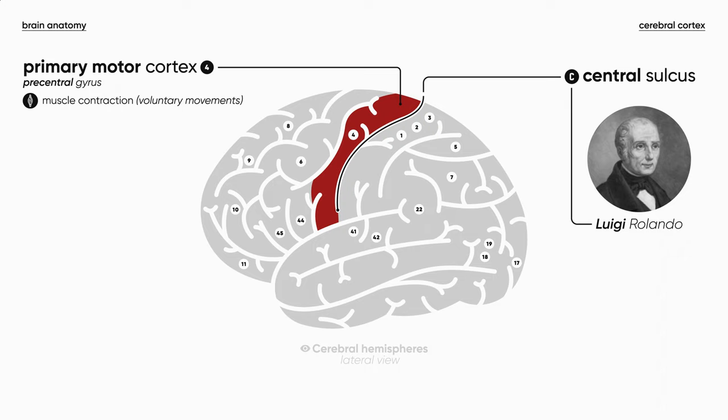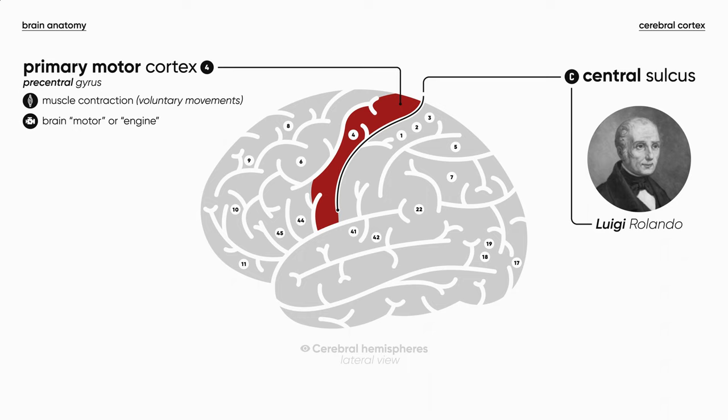How to remember the location? It is quite simple. The motor area is located anteriorly to the central sulcus, just like the car motor or car engine is located in its front part.